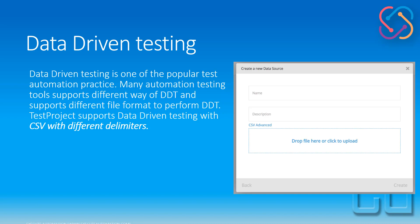Data-driven testing is one of the popular test automation practices. Many automation testing tools support different ways of DDT and support different file formats such as JSON, Excel sheet, CSV file, or databases. TestProject supports data-driven testing with CSV using different delimiters — like pipe, space, or comma separated. We are going to do this data-driven testing using TestProject in this video.